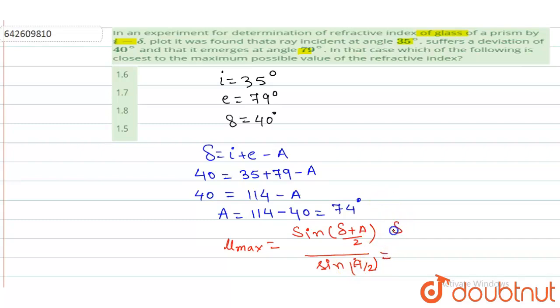If I put these values, it becomes sine of (40 plus 74) divided by 2, divided by sine of 74 divided by 2. If I solve this and take the sine values, it comes out to the nearest 1.44.